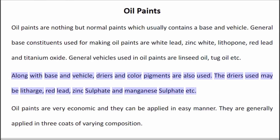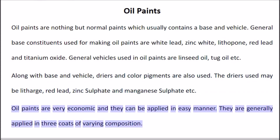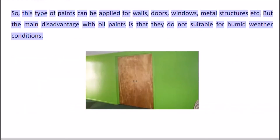Along with base and vehicle, dryers and color pigments are also used in oil paints. The dryers used may be litharge, red lead, zinc sulfate, and manganese sulfate. Oil paints are very economical and can be applied in an easy manner. They are generally applied in three coats of varying composition and can be applied for walls, doors, windows, and metal structures. The main disadvantage is that they are not suitable for humid weather conditions.